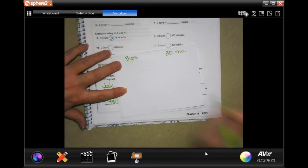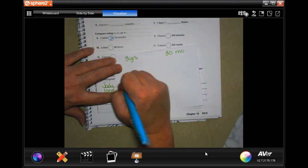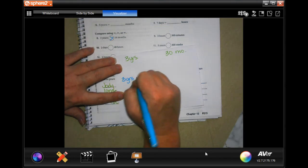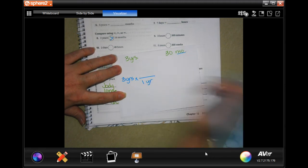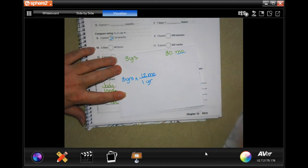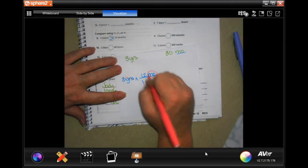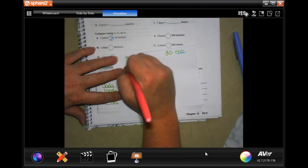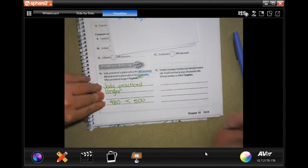We're going to start with what we know, that's our three years. In one year we're trying to get to months, there's 12 months. Now we cross cancel years, we're left with months, that's good, and three times 12 is 36.